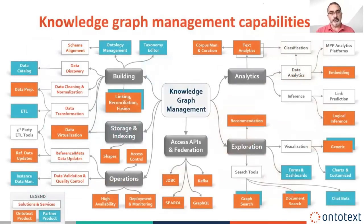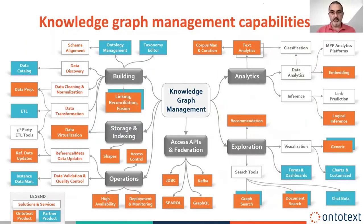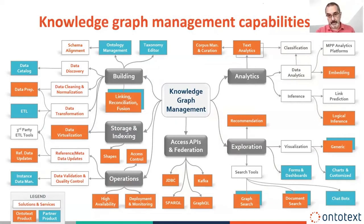On the bigger picture, a knowledge graph management platform should cover a larger set of capabilities: from building these big data artifacts, storing, indexing, operations, accessibility, federation, exploration, and analytics. For each of those there are more specific capabilities that should be present. We develop a lot of these — the orange boxes — ourselves, and we made the decision to use partner ecosystem tools for other capabilities like text-only editors, ontology editors, data catalogs, and chatbots. That's our way of working in this field, because we can't cover it all at the level of maturity we require for our software.